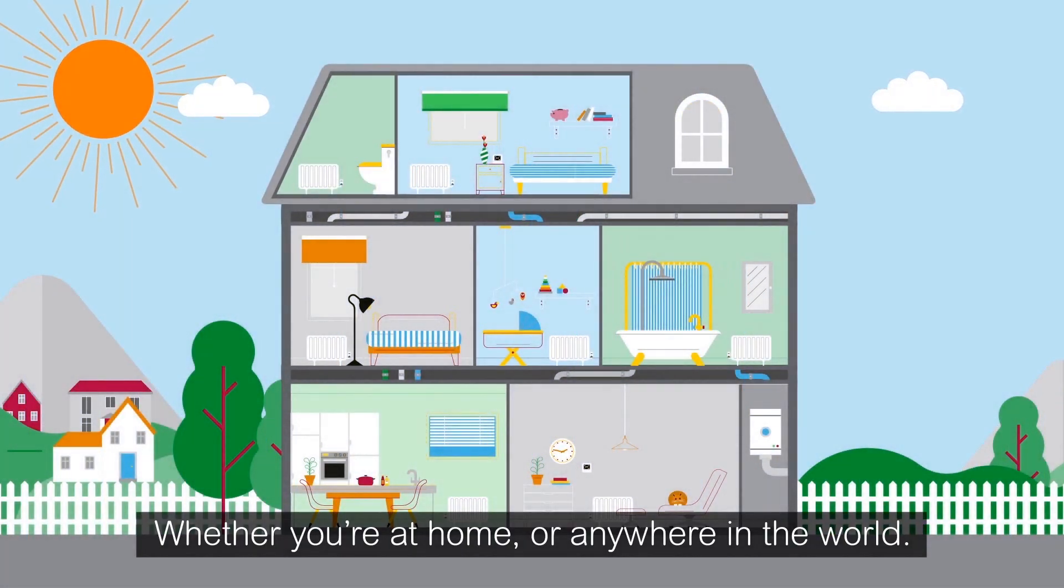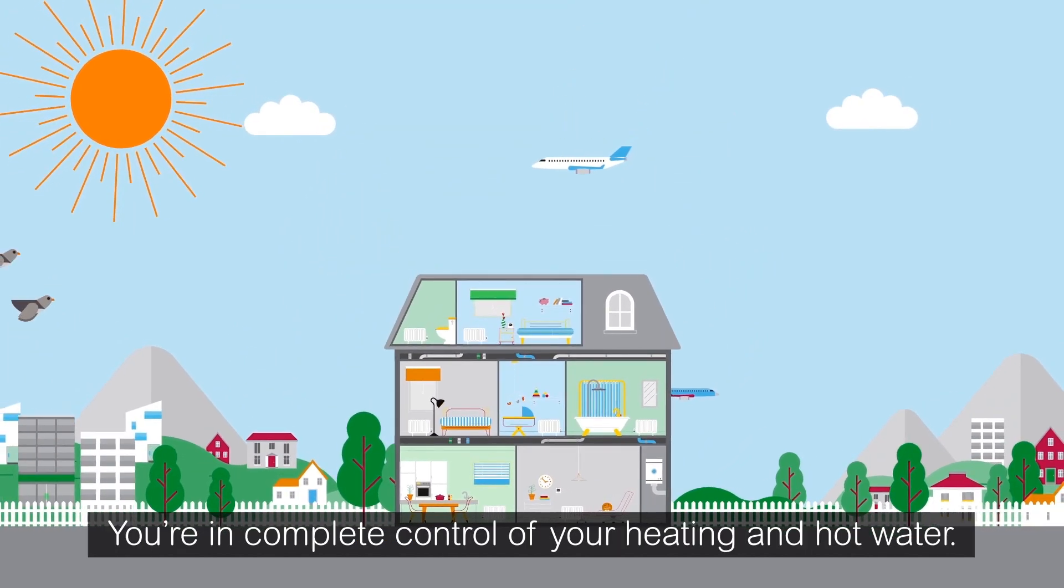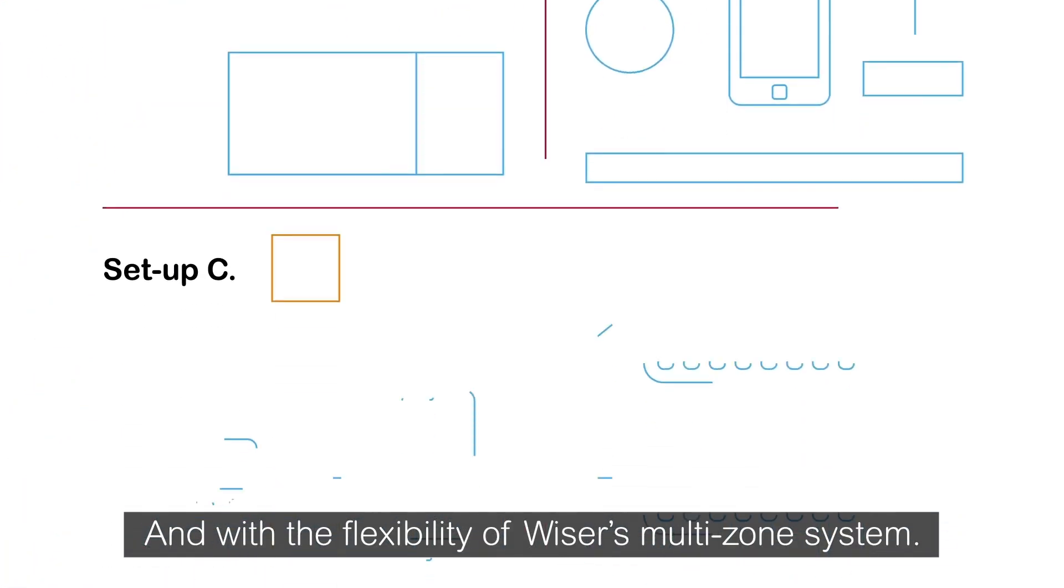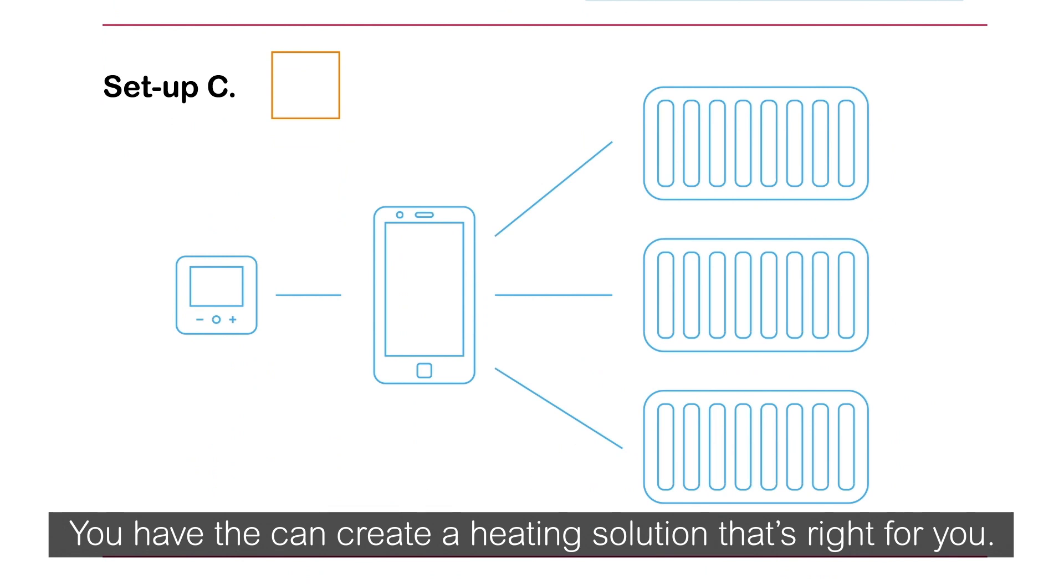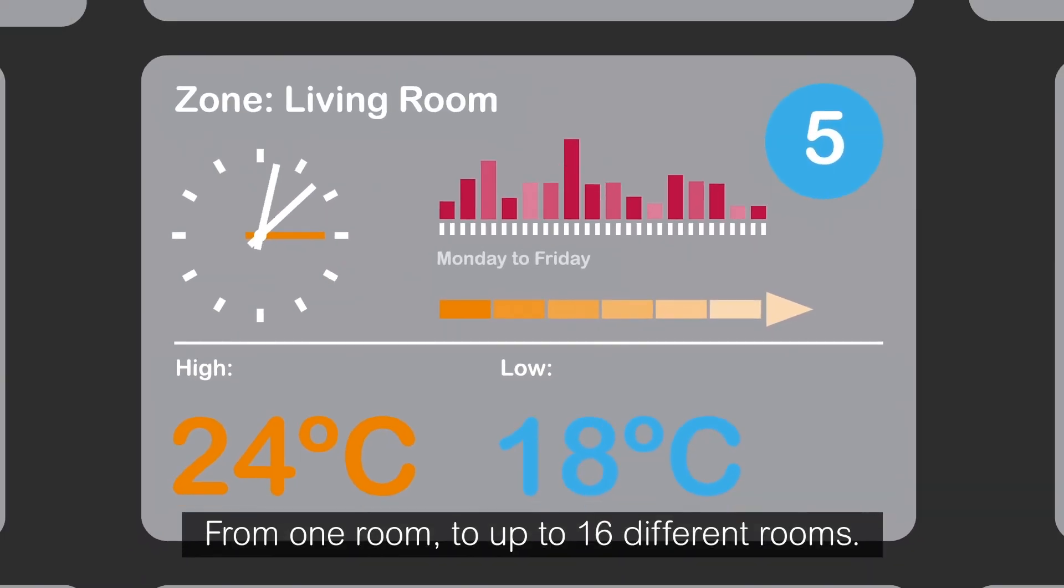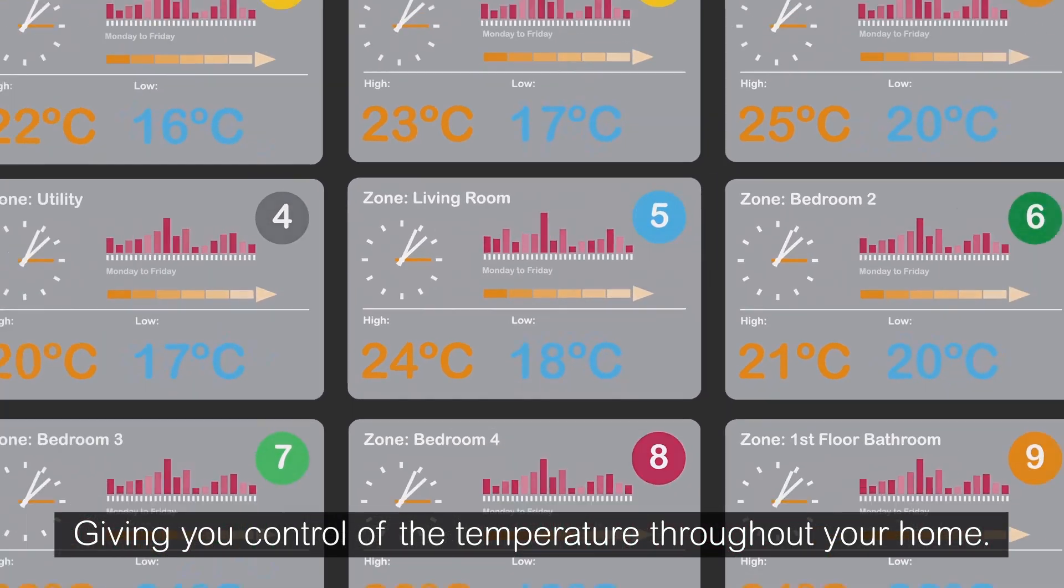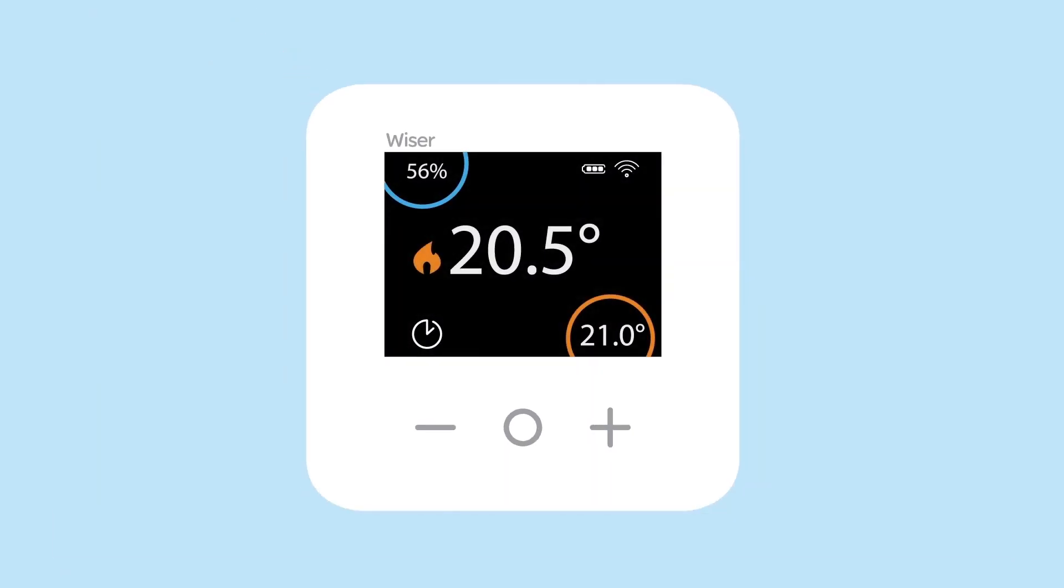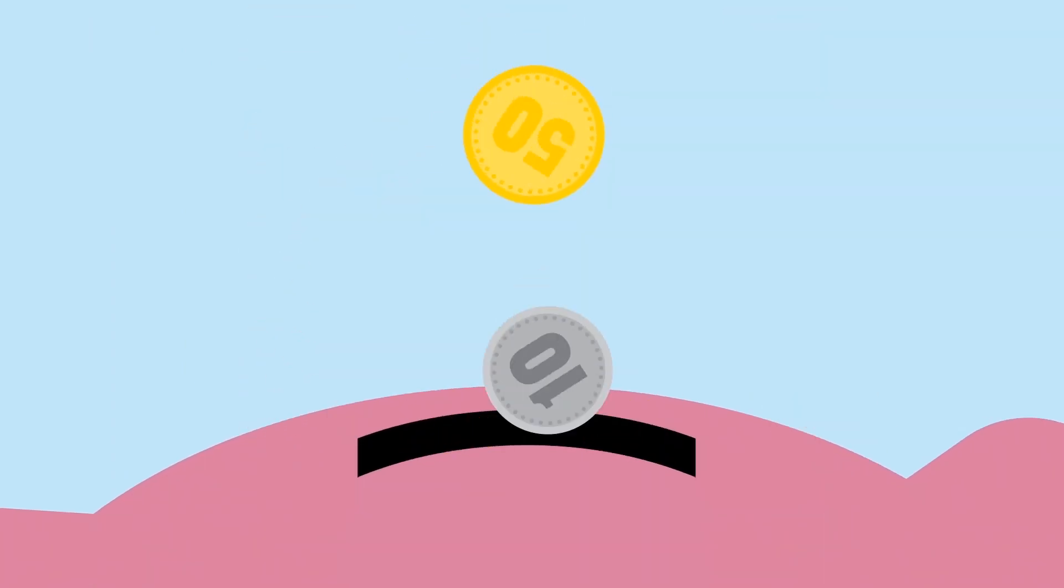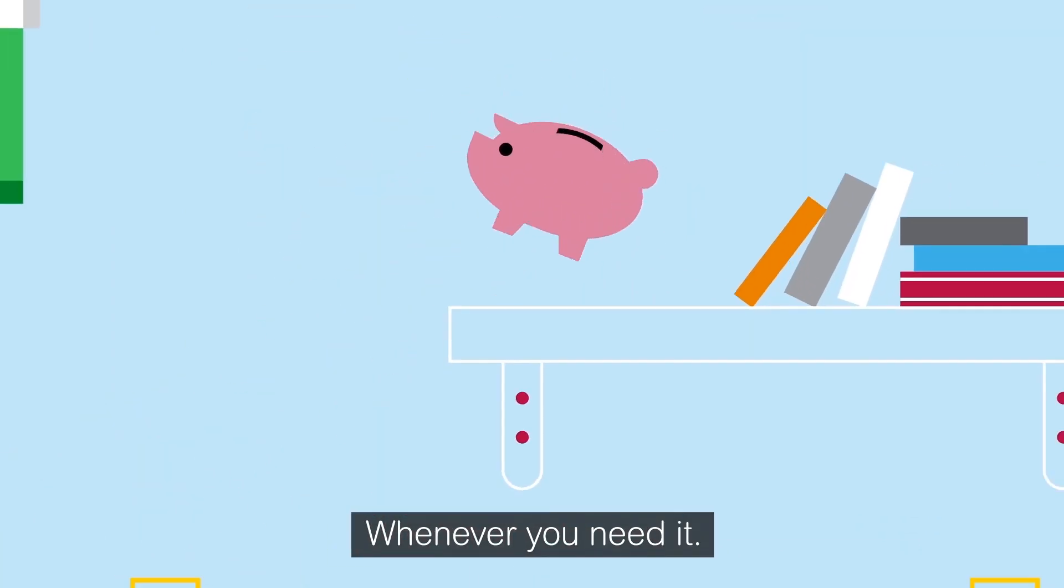Whether you're at home or anywhere in the world, you're in complete control of your heating and hot water. With the flexibility of Wiser's multi-zone system, you can create a heating solution that's right for you, from one room to up to 16 different rooms, giving you control of the temperature throughout your home while helping to save money on your energy bills, wherever you are, whenever you need it.